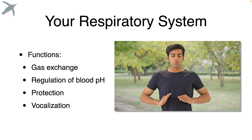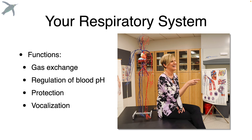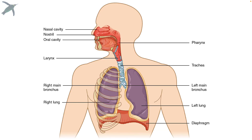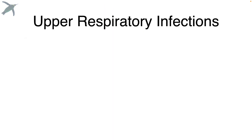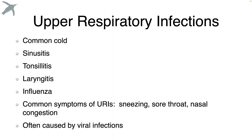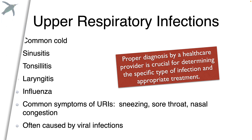The respiratory system also functions to protect us from things we inhale that might be dangerous, and my favorite — speaking. These are the components of the respiratory system, and we usually divide them into upper and lower zones. This is mainly for clinical purposes, because we define respiratory infections this way. Common symptoms of URIs include sneezing, sore throat, and nasal congestion, and they're often caused by viruses.